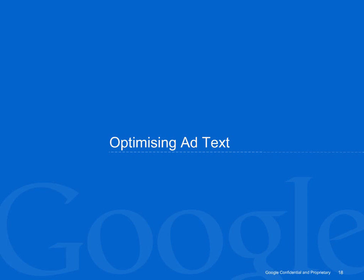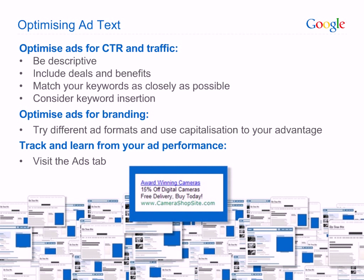Finally, let's talk about making the text of your ads as effective as possible. You should test and experiment with different ad text strategies until you find what works for you and the specific message you're trying to convey. To optimize ad text for CTR and traffic, include product descriptions, benefits and any current value offers. Match keywords tightly to ad text to ensure relevance and, where possible, use keyword insertion. To optimize ads for branding, try different ad formats. To promote brand awareness, try visual ad formats like image ads — graphical messages can grab attention and allow a customer to engage with your brand. Use capitalization to your advantage: capitalize the first letter of every word in your display URL to bring more attention to your company name and brand.